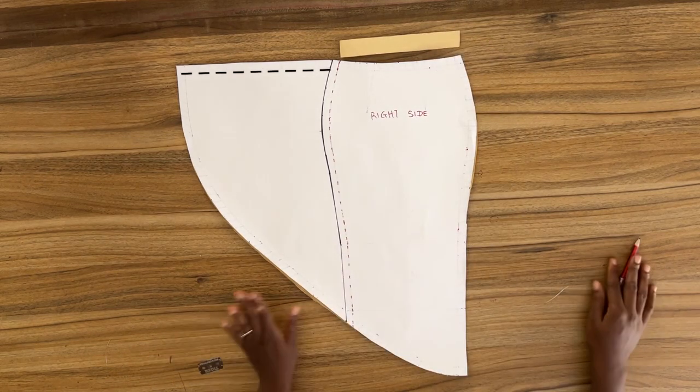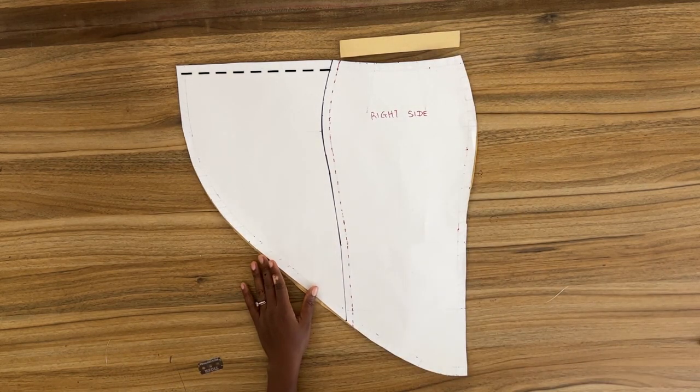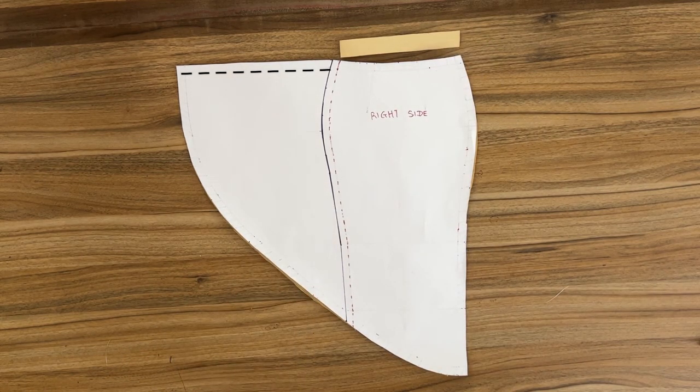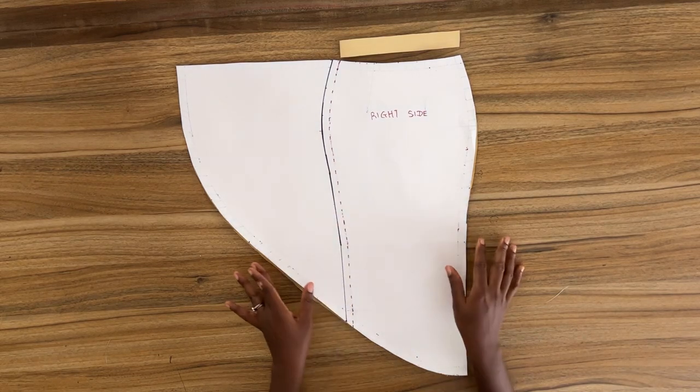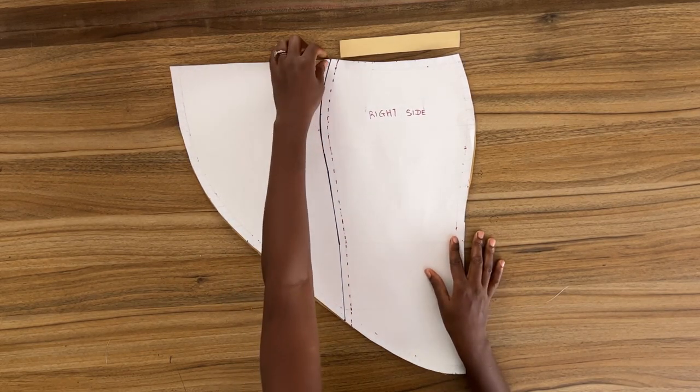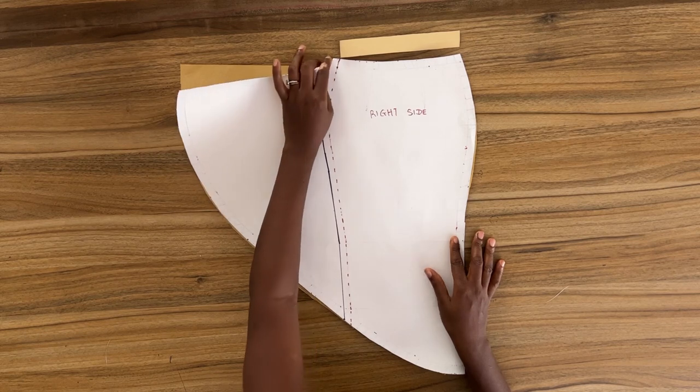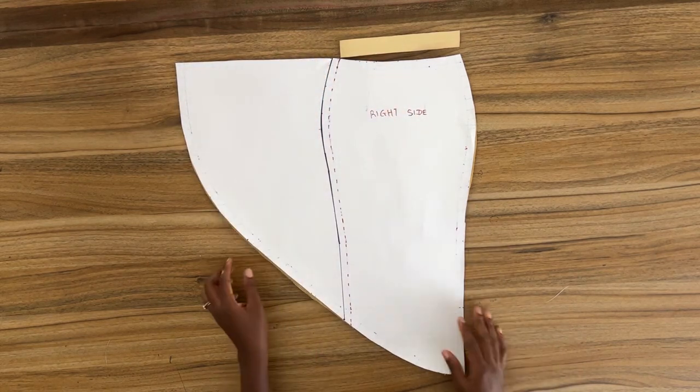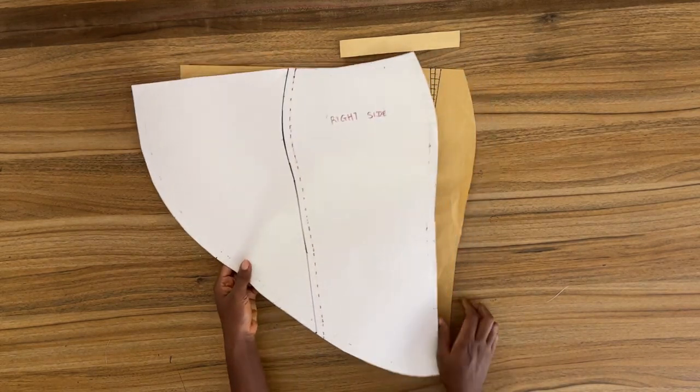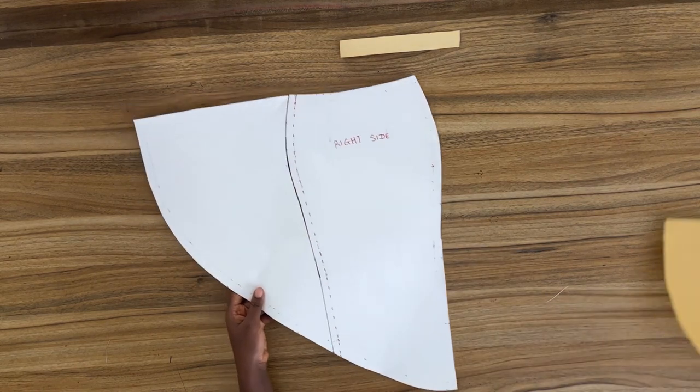Then once this is done, you want to hem the waistline of the drapey portion of the skirt and then add in your waistband. By the way, the waistband I use for this skirt is just a straight waistband, so a straight waistband is just a rectangle. Okay, so that's it, and your skirt should be done at this point.